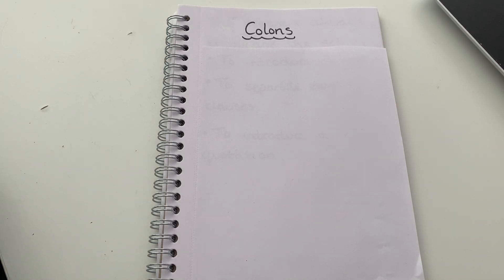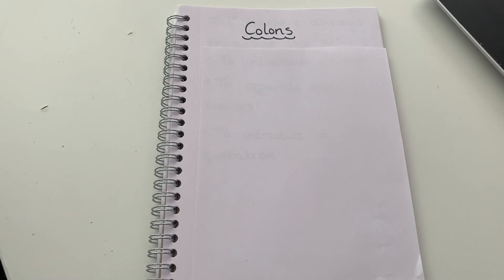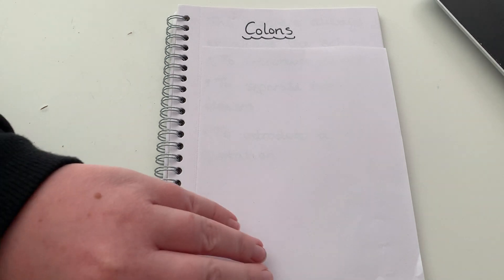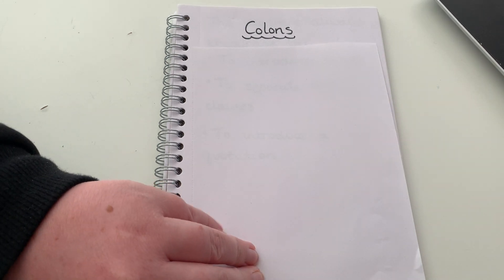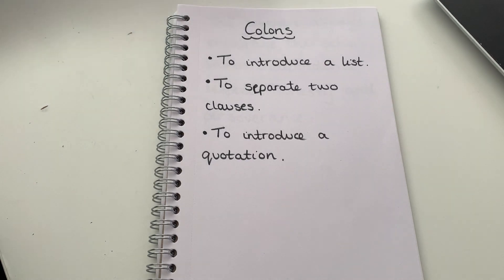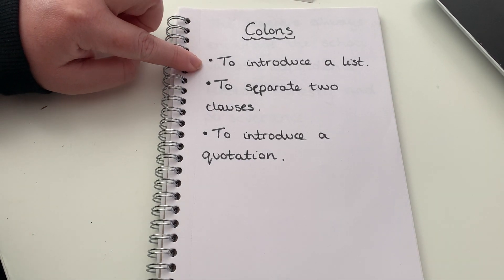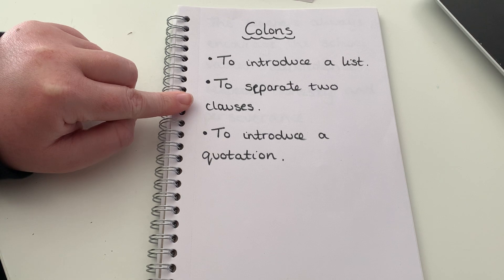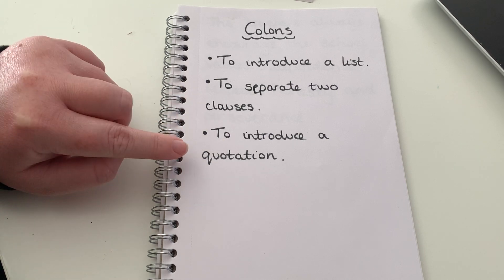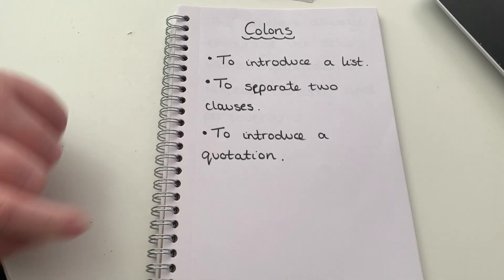In this video I'm going to talk you through how to use colons. There are a few different ways we're going to talk about today and I'm going to give you an example for each one. The three different ways are: to introduce a list of items, to separate two clauses, and to introduce a quotation.